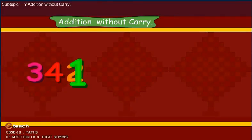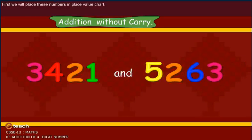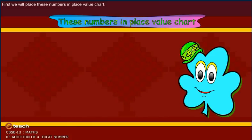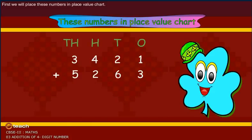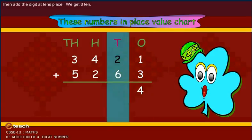Addition without carry. First, we will place these numbers in place value chart. Add the digits at ones place. We get four ones. Then add the digits at tens place. We get eight tens.